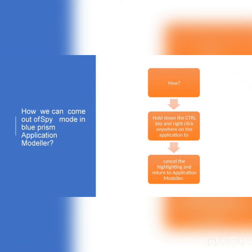You have to hold down the Ctrl key and click the application to cancel the highlighted elements. Then you return to the application model when using Ctrl+Right Click.